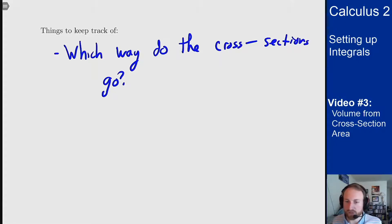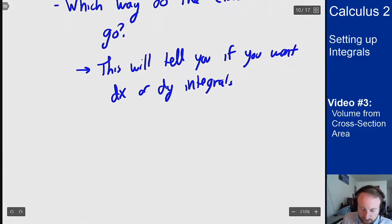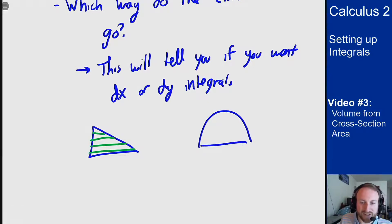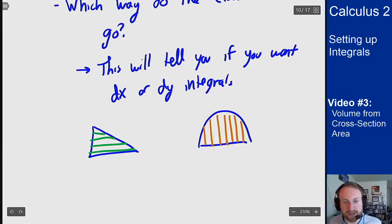Think back to the area between two curves problems. You could either do vertically simple regions and get an x integral or horizontally simple regions and get a y integral. So for instance if I have a triangle region and I'm told my cross sections perpendicular to the y-axis are given shape, that means I'm given information about sections this way, which means I will want a dy integral. On the other hand, if I'm told something about the cross sections perpendicular to the x-axis, that's giving me sections this way, and so I'm going to want a dx integral.